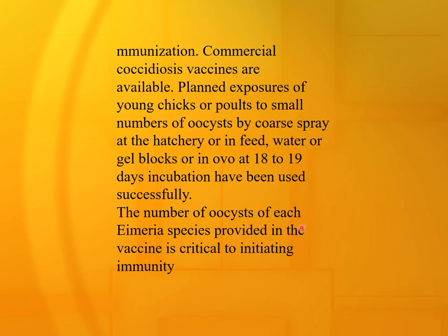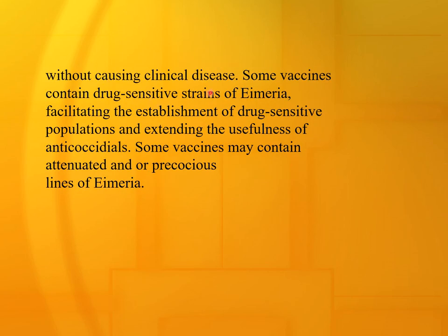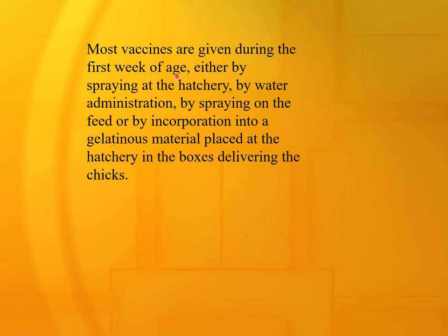The number of oocysts of each Eimeria species provided in the vaccine is critical to initiating immunity. Some vaccines contain drug-sensitive strains of Eimeria, facilitating establishment of drug-sensitive populations and extending the usefulness of anticoccidials. Some vaccines may contain attenuated or precocious lines of Eimeria. Most vaccines are given during the first week of age, either by spraying at the hatchery, water administration, spraying on feed, or by incorporation into gelatinous material placed in hatchery chick boxes.